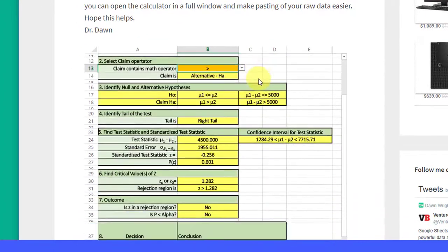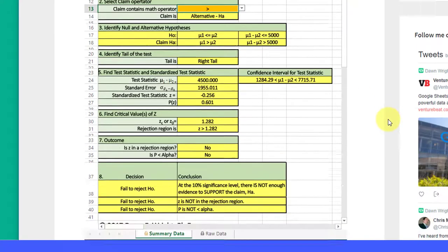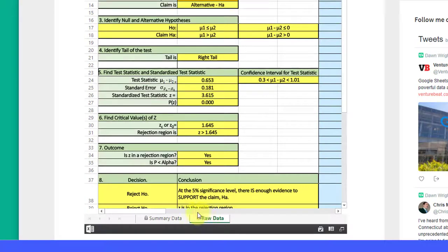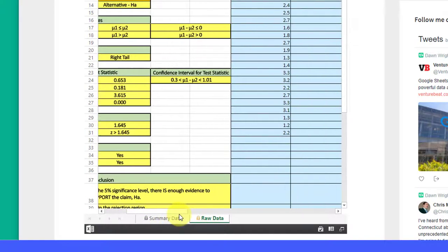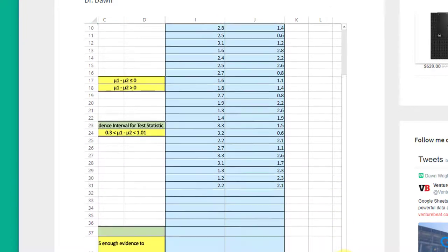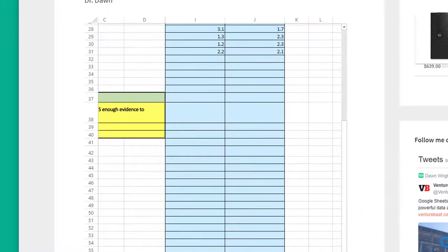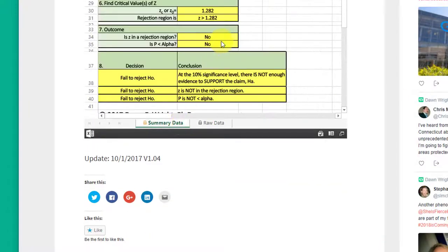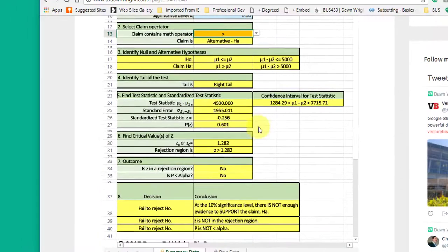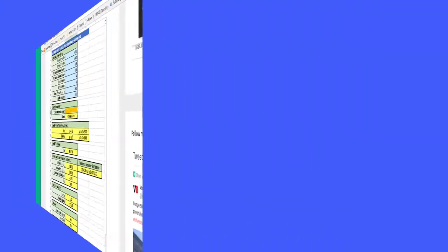So this calculator is very quick. If you're given summary data, I might mention that there's also a version in which you can key in raw data. That's a little more tedious if you've got a lot of data, but you can do it. The calculator will help you avoid what I call the dumb mistakes by giving you all this information, literally just by entering your data in the blue cells and selecting the claim operator. So I hope this helps.